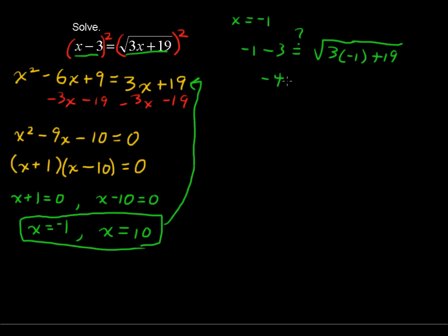Negative 1 minus 3 is negative 4, and the square root of negative 3 plus 19, that's the square root of 16. So negative 4, that does not equal 4. So we're going to cross this out. This is called an extraneous solution.